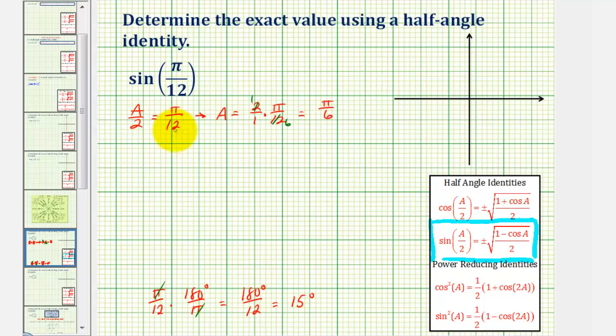So applying the identity, we know that sine pi over 12 is equal to the sine of pi over six divided by two. And now before we apply this identity, let's determine whether the sine function value is going to be positive or negative.